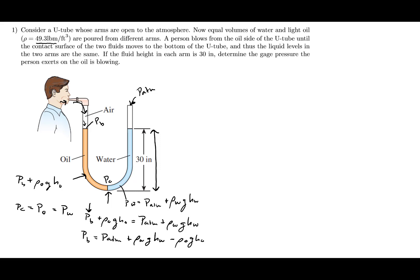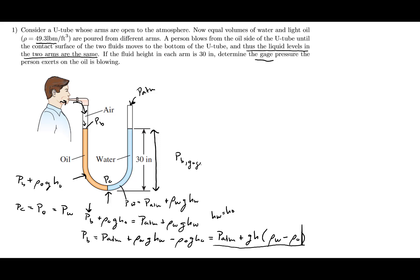Since the height of the water equals the height of the oil (both arms have the same liquid level), we can factor out g and H. So PB = P_atm + g × H × (ρ_water − ρ_oil). Since the problem asks for gauge pressure, we subtract atmospheric pressure, giving: PB_gauge = g × H × (ρ_water − ρ_oil). That's one way to solve it.